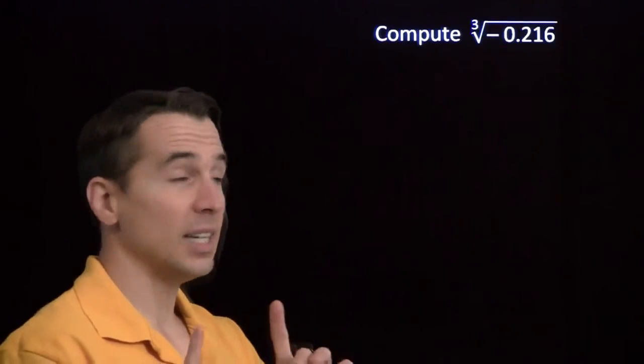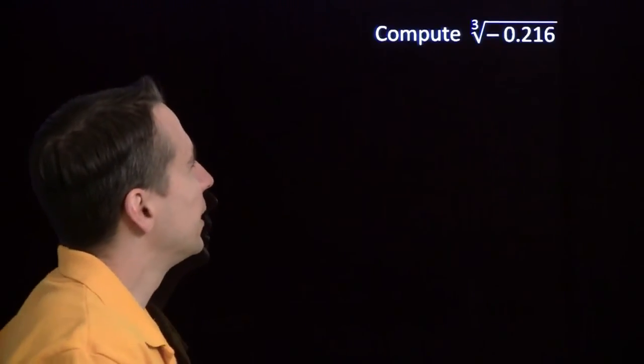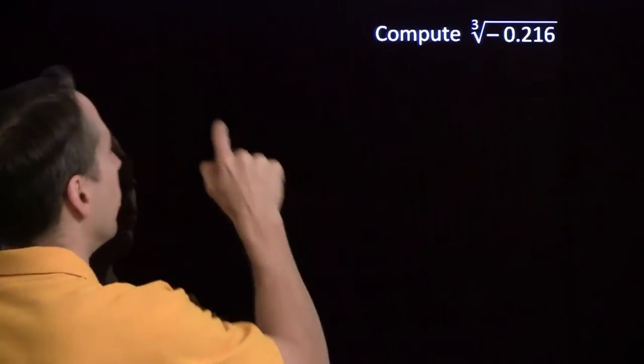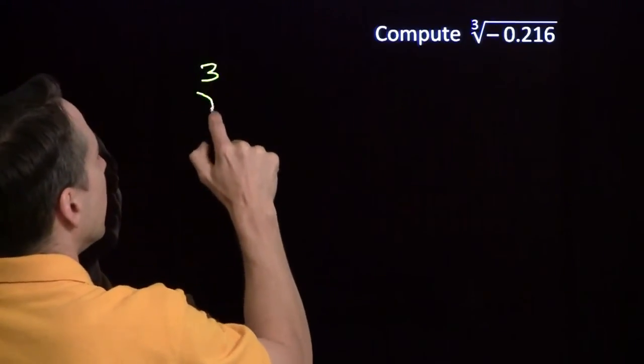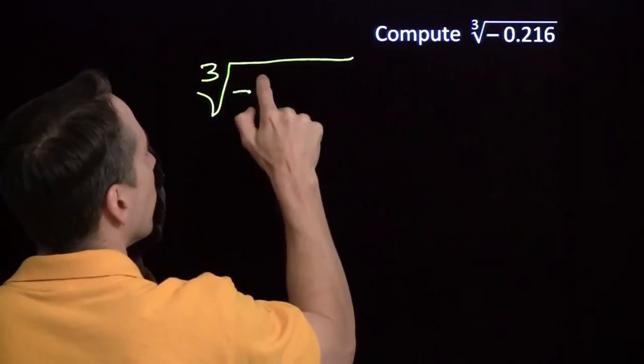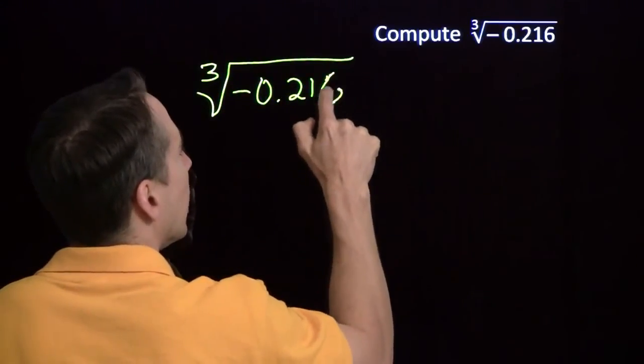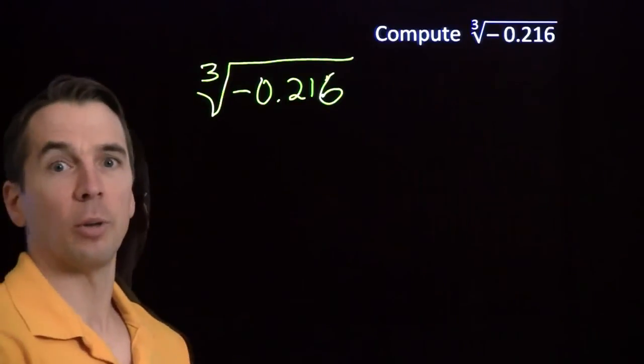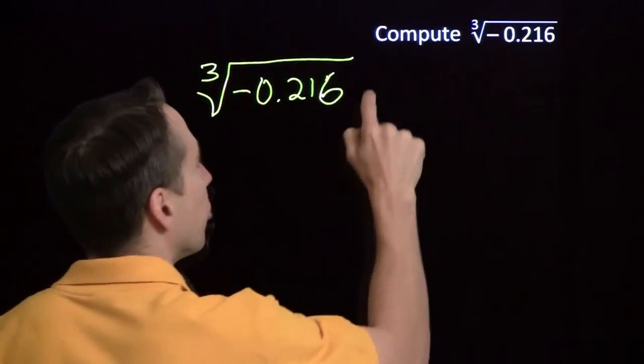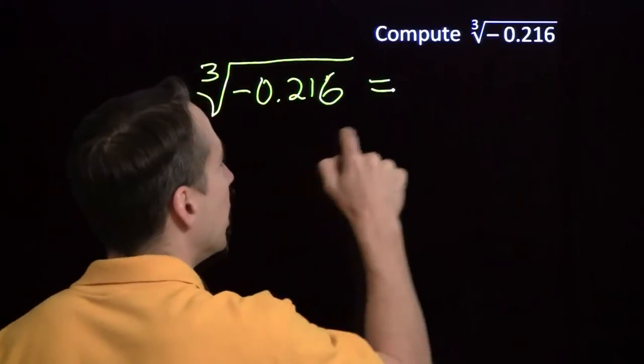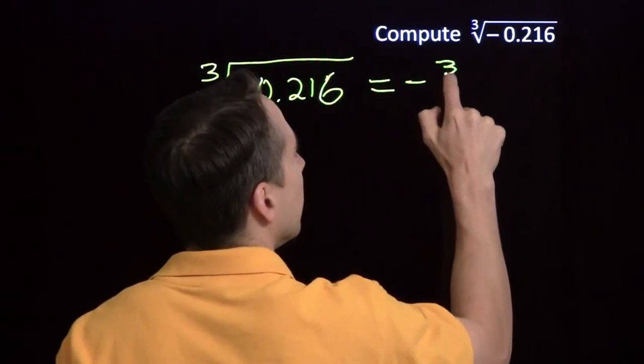You might be able to just guess the answer again here, but if you can't, then what are you going to do? Well, the first step is to deal with the negative. The only way to get a negative number when you cube something is if you start off with a negative number. So we know that we're going to be cubing a negative number here. So we're going to pull out that negative.